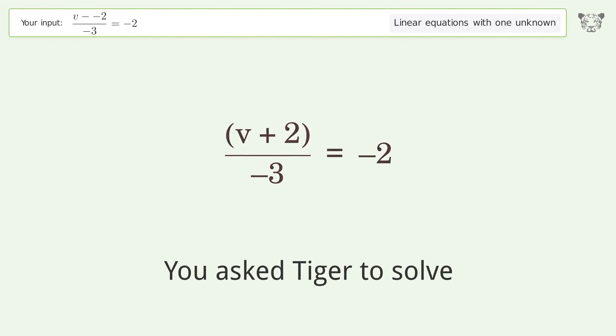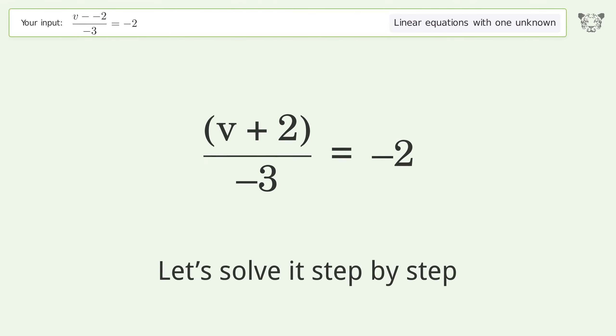You asked Tiger to solve this. It deals with linear equations with one unknown. The final result is v equals 4. Let's solve it step by step. Simplify the expression.